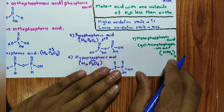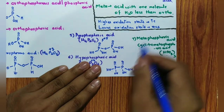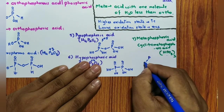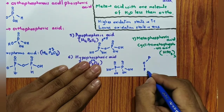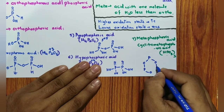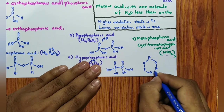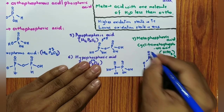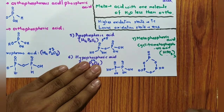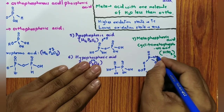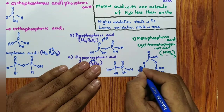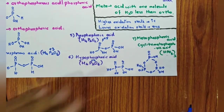Trimetaphosphoric acid (HPO₃)₃: it is a cyclic structure. P–O bonds alternate around the ring, each phosphorus also has a compulsory P=O double bond and one P–O–H bond. Very easy to draw.